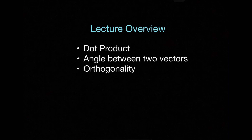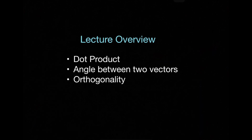In this video we will discuss the dot product of vectors. We will see how to find the angle between two vectors, and we will see that if the angle is zero the vectors are parallel, if the angle is 90 degrees they are perpendicular and called orthogonal vectors. So let us begin with the dot product.